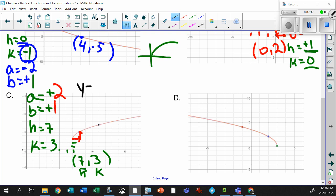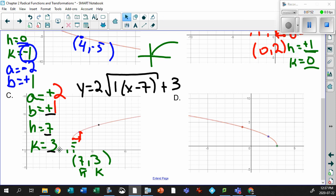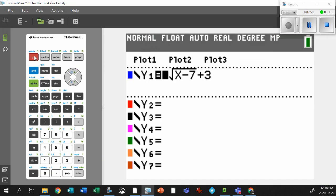Y equals 2. Square root. Your b value is 1. Your h is 7. So there's your 1 times x minus 7. And your k is going to be 3. Let's see if that gives us that point now on our calculator. So let's throw that equation to our calculator. There it is. I'm going to hit graph. There's the graph.